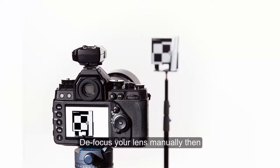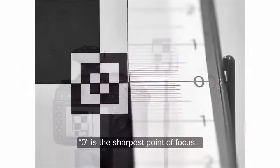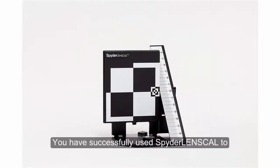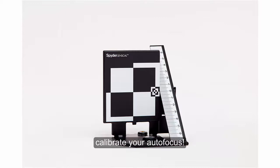Defocus your lens manually, then repeat this process until zero is the sharpest point of focus. Congratulations! You have successfully used Spider Lens Cal to calibrate your autofocus.